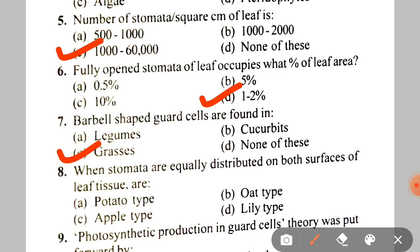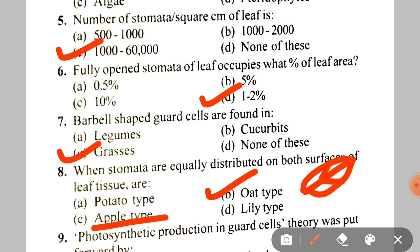Next question: when stomata are equally distributed on both surfaces of the leaf, the tissue is called A. Potato type, B. Oat type, C. Apple type, D. Lily type. The answer is B — oat type. Oat type stomata are equally distributed on both surfaces. Apple type stomata are situated only on the lower surface.